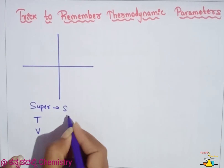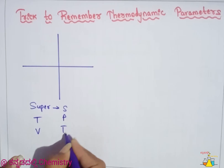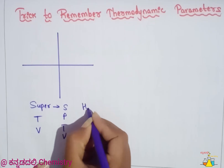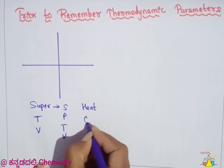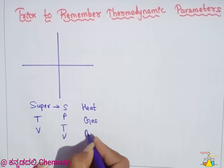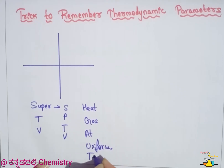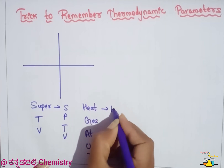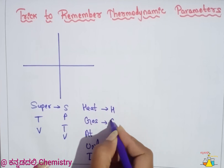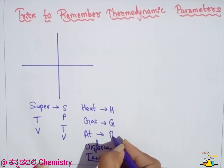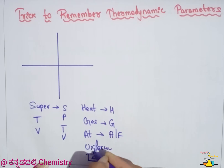In the S-pressure-TV coordinate system, the mnemonic is: 'Heat Gas At Uniform Temperature.' Heat corresponds to enthalpy (H), Gas to Gibbs free energy (G), A to Helmholtz free energy (A), and Uniform to internal energy (U).